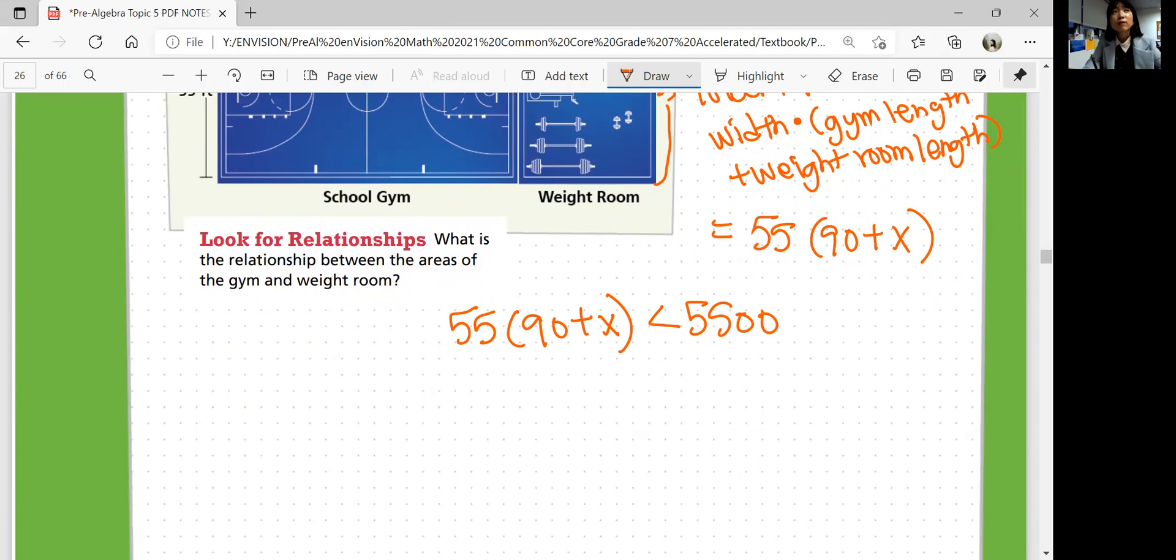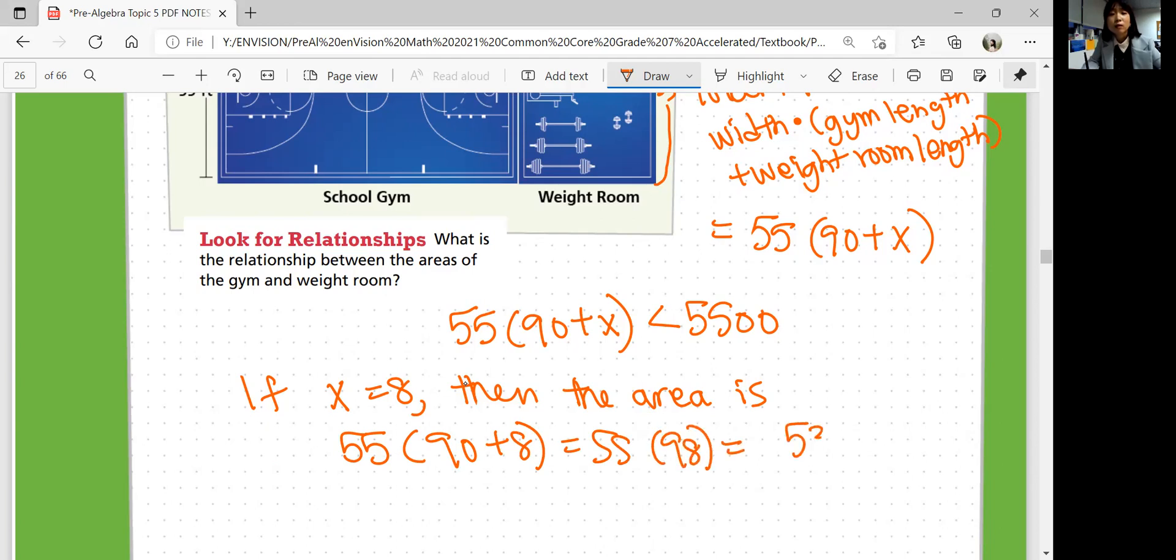So for example, if you say x is 8, then the area is, what is the area? 55 times 90 plus 8. So 55 times 98 would be 5,390 square feet. Is this under? And this is under 5,500.